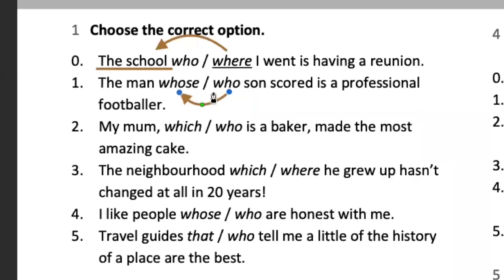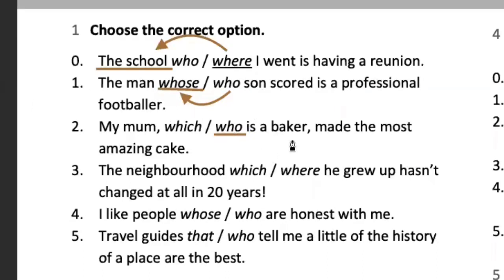Very good job. So the answer for number one should be 'whose' — possession. Can you read number two, please? 'My mom, who is a baker, made the most amazing cake.' It's a person, so we say 'who.' It goes between commas because it's a non-defining relative clause — it's not defining, it's just giving an extra detail.